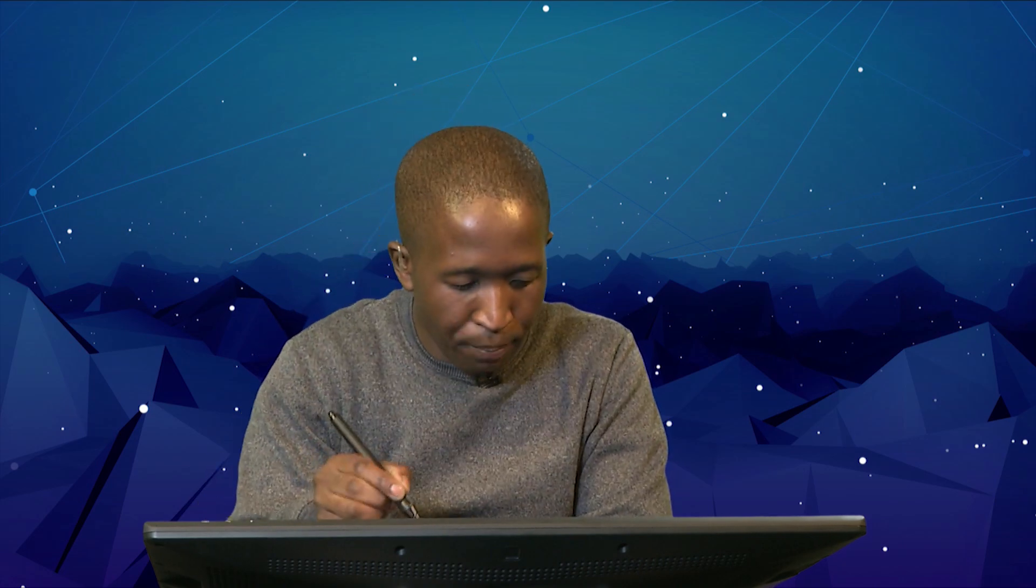In this case I'm going to use C and N without B, since I don't know what the story is with B. So (8-5)/(0-3): 8 minus 5 is 3, divided by negative 3 gives us a gradient of negative 1. That's the gradient of BC, equal to negative 1.